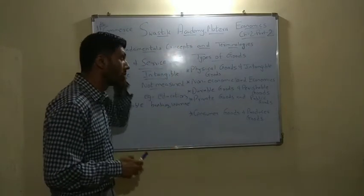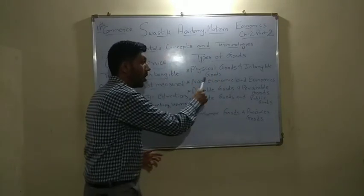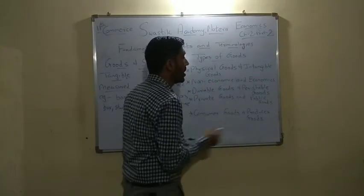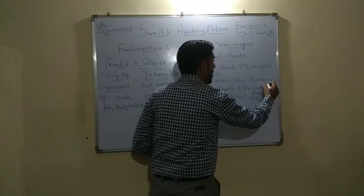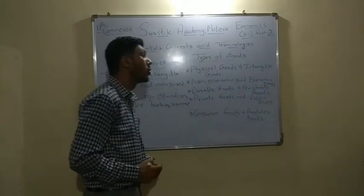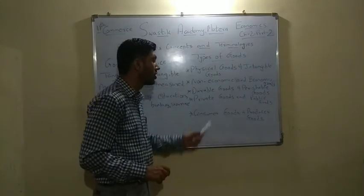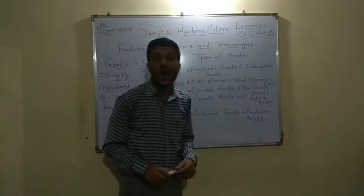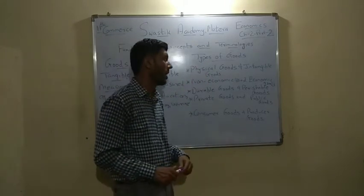Yeh jo introduction tha. Ab types of goods hain. Kaun kaun se? Physical goods and intangible goods. Non-economic goods and economic goods. Durable goods and perishable goods. Private goods and public goods. And consumer goods and producer goods. Ab hum ek ek karke isko samajhne ki koshish karte hain.